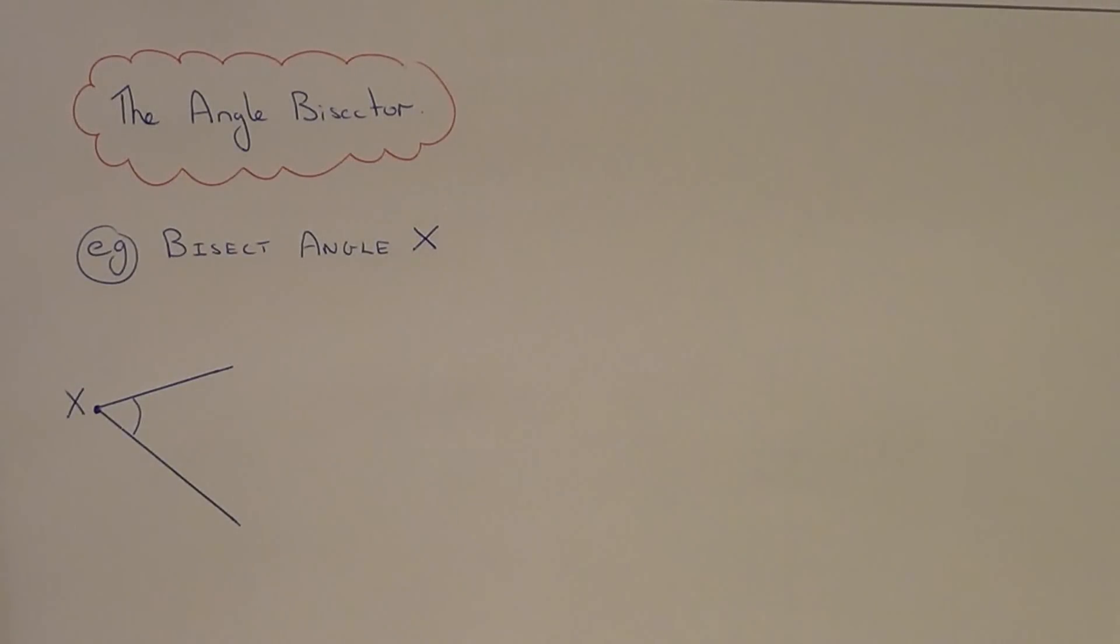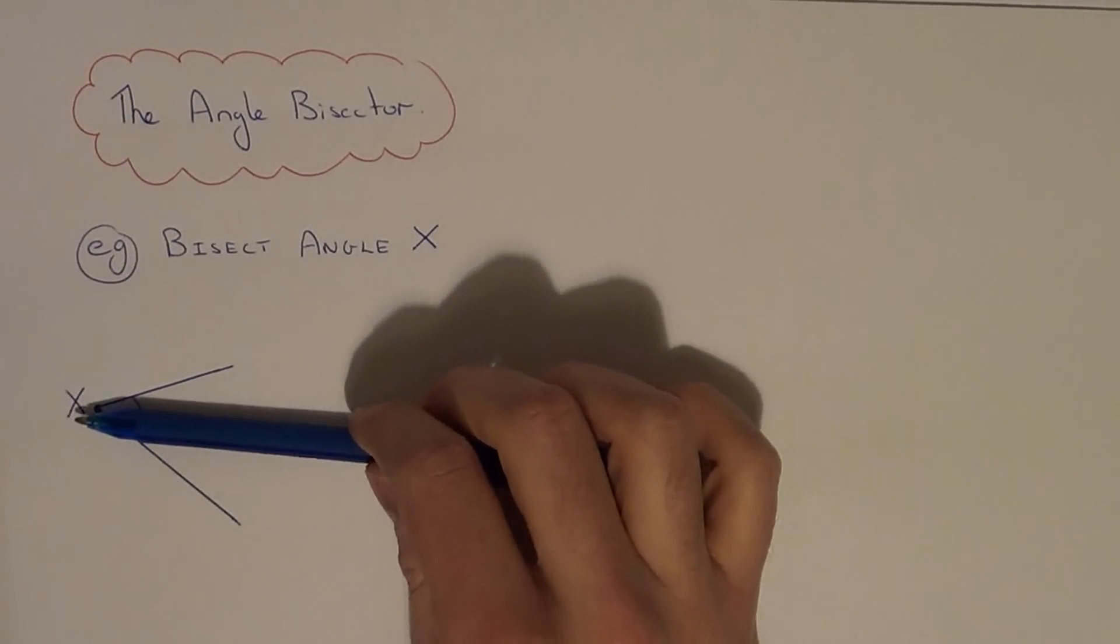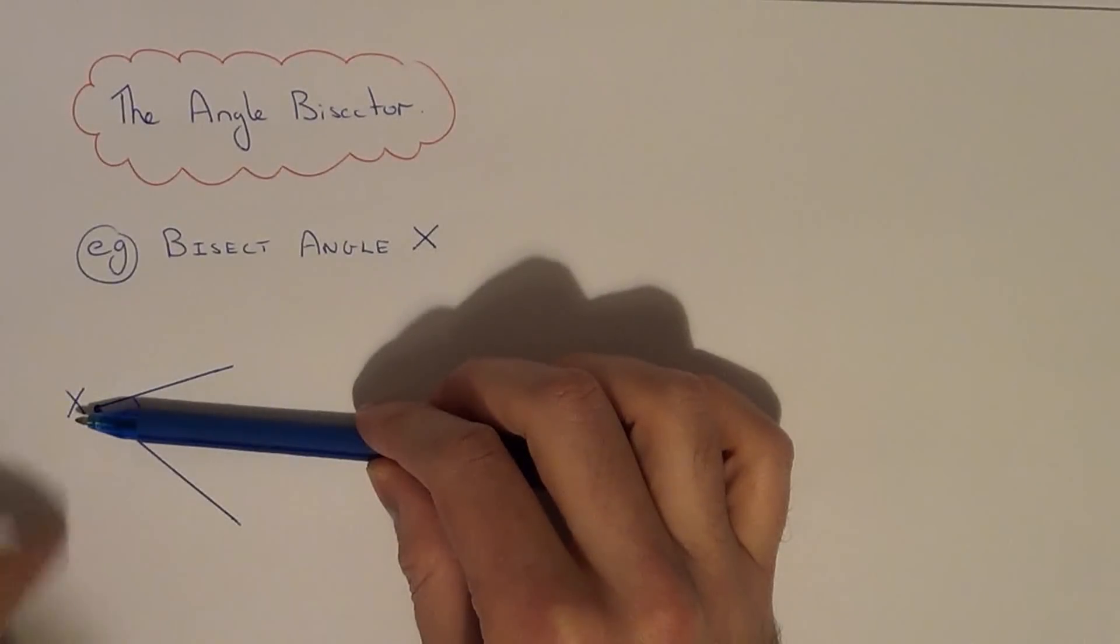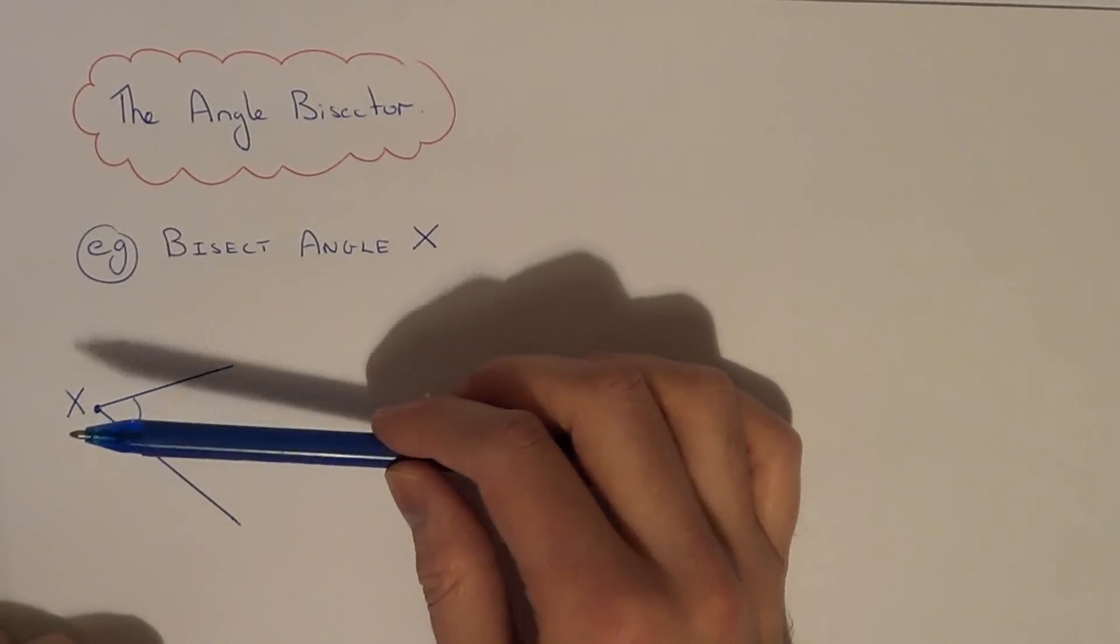What you're doing, you're cutting the angle into two equal halves. So what we're doing is putting a line going through the centre of that angle.